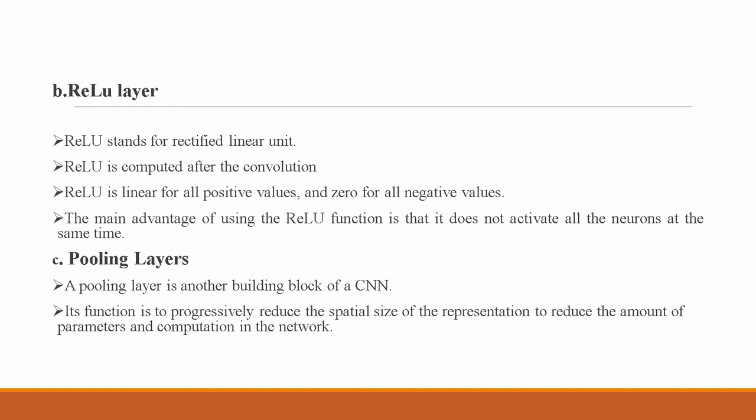A pooling layer is another building block of a CNN. Its function is to progressively reduce the spatial size of the representation in order to reduce the number of parameters and computations in the network.